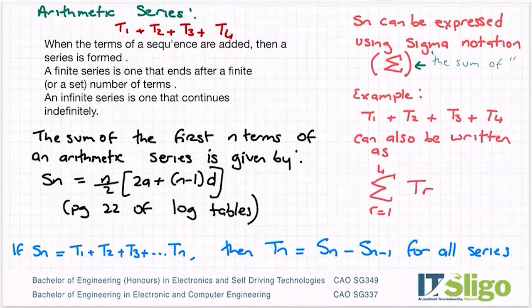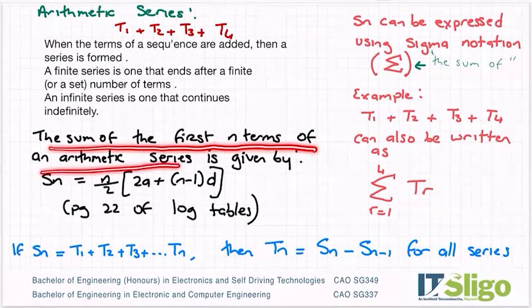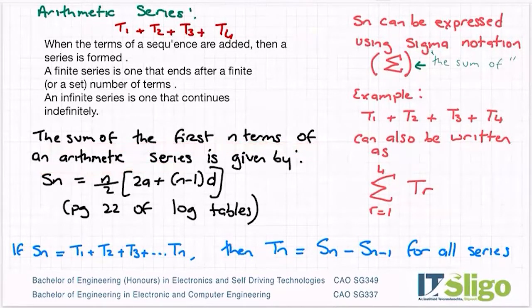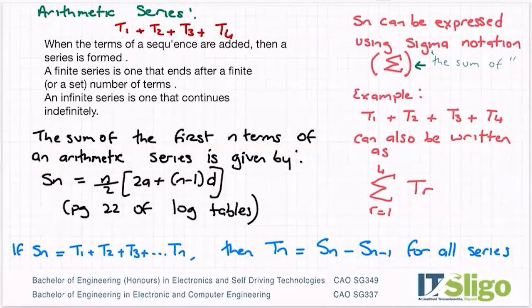So for an arithmetic series, then there's another formula for the sum. So the sum of the first n terms of an arithmetic series is given by SN equals N over 2 times 2A plus N minus 1 times D. And thankfully, that is also in the log tables here. So the SN formula and it explains up here exactly what they are. TN is the Nth term. SN is the sum of the first N terms. So if you're asked to sum or add up, you're using an SN formula.